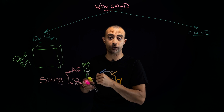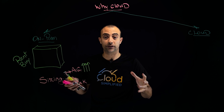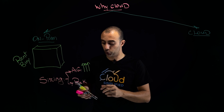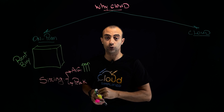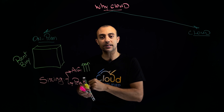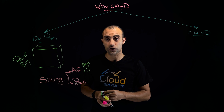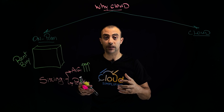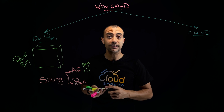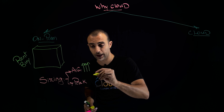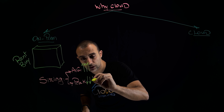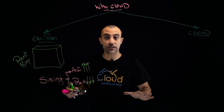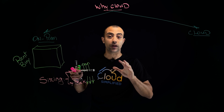That's why on-premise we don't size according to the average — we size according to the peak, to be ready for spikes. But the important question is: how often does this peak actually occur? Maybe once a month, or twice a quarter. This means your resources are under-utilized most of the time — you've oversized, but you accept it to stay on the safe side.